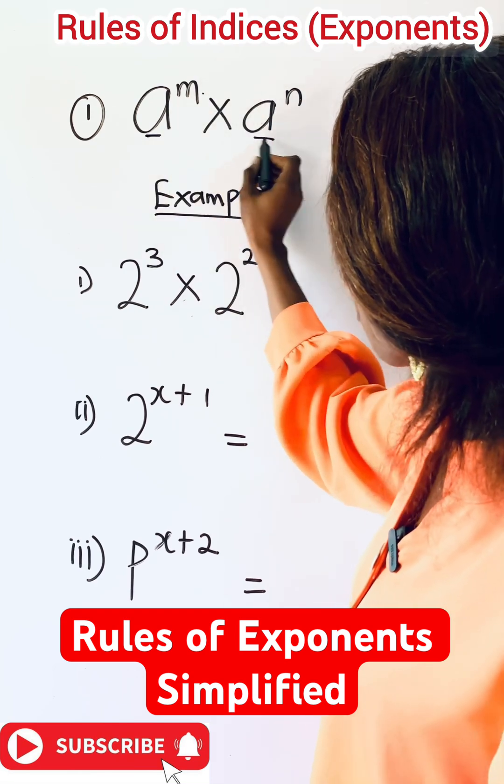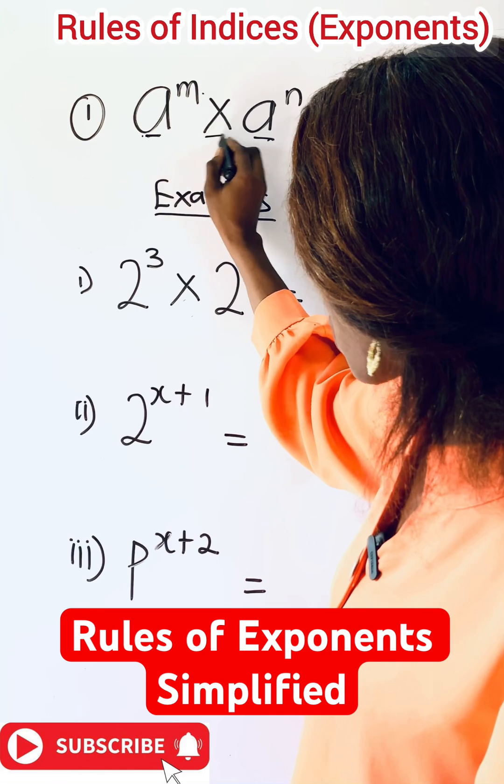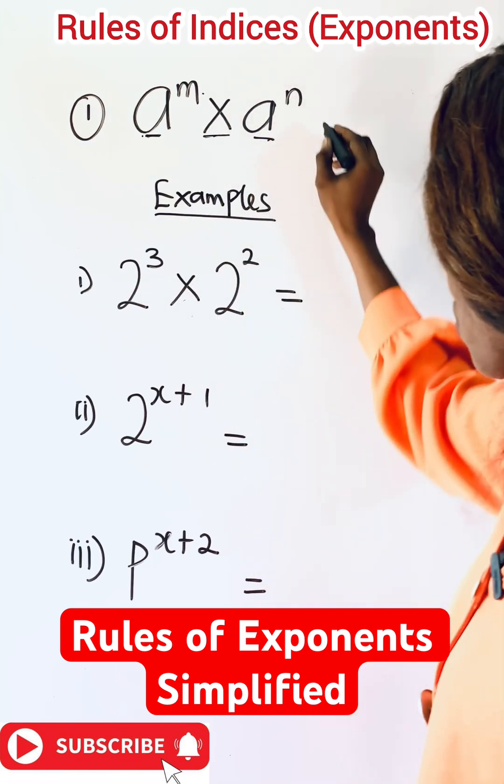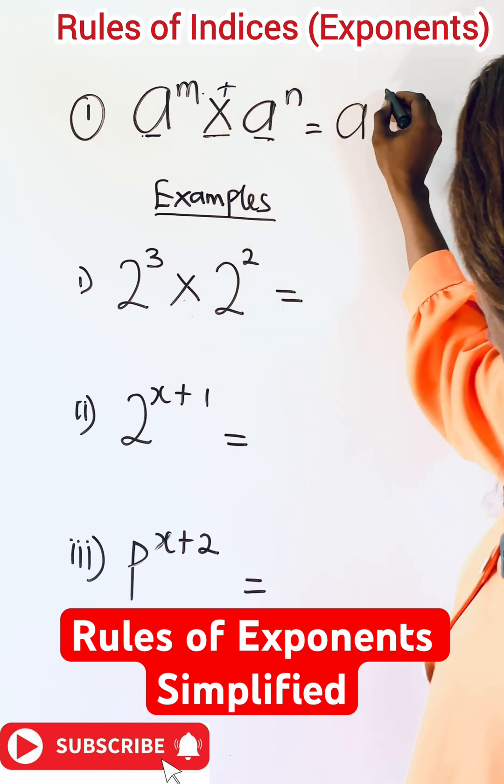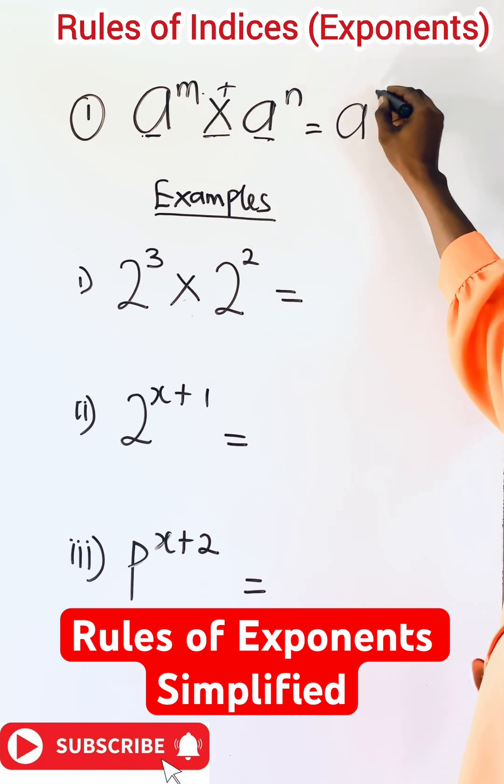You notice the bases are the same and there is a multiplication sign in between. So what you do is just take one base, then turn this to addition. So it becomes a raised to power m plus n.